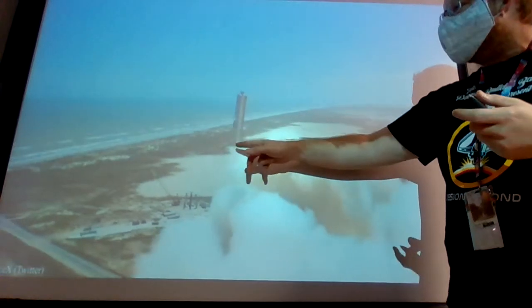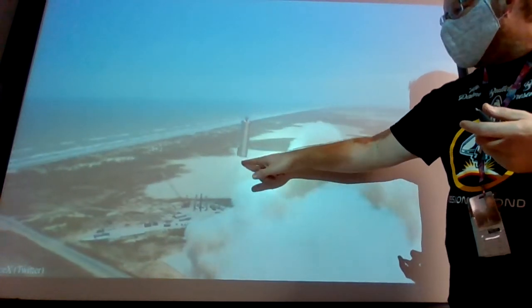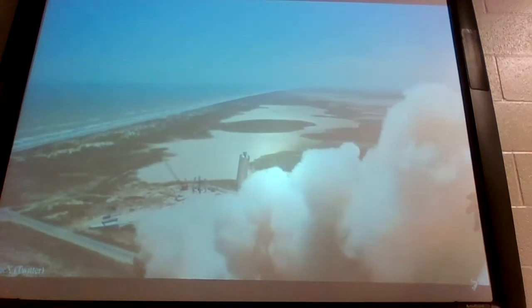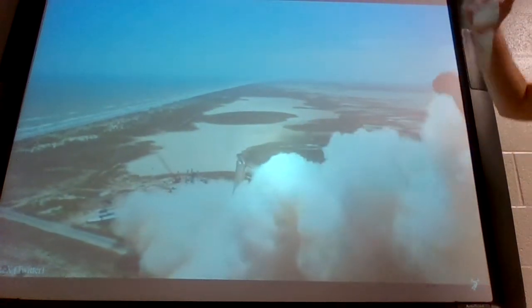It comes down as all the dust is kind of clearing out. And right about here, you'll see the landing legs pop out. There they are. You can see the little tiny landing legs there. They're real short. And actually, the last time on the other rocket, they got crushed. Two of them got crushed, and the rocket was leaning.